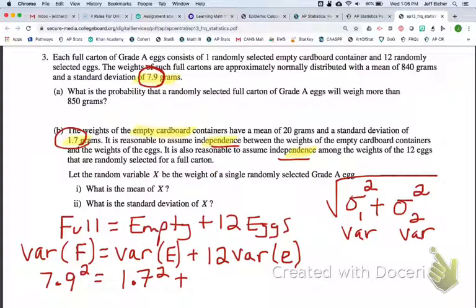And each egg is its own random variable, but we have 12 of those, and they're all identical variances. So we have 12 of those variances of E, one single egg. And we basically have to solve this and isolate this variance of E right here.